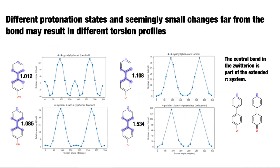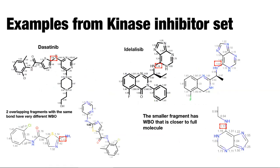Most cheminformatics tools, when cutting rotatable bonds, will label this as a rotatable bond and you'd think you can fragment it. The important point is that you can have substituents far away from the rotatable bond you're looking at that can change the electronic property of that bond.